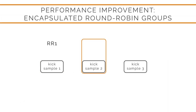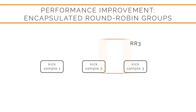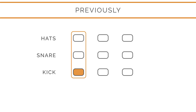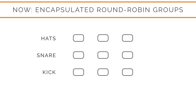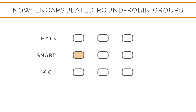Round-robin functionality makes the plugin play a different version of a sample every time a note is played. Previously, any incoming note would trigger the round-robin group number change for all instruments. Now we have encapsulated the round-robin groups to each individual sound, so playing one instrument will not affect the round-robin movement in the other instruments. This creates a greater variety of played sounds since one instrument has no impact on the performance of the other.